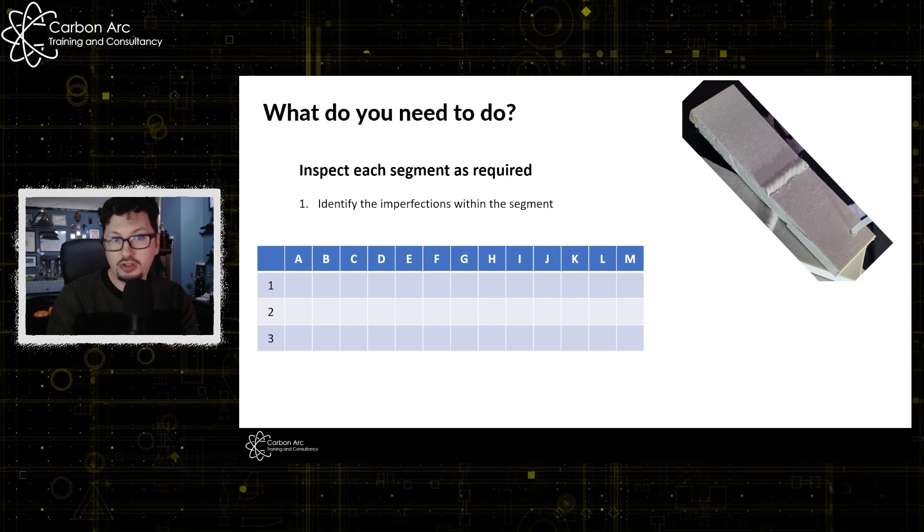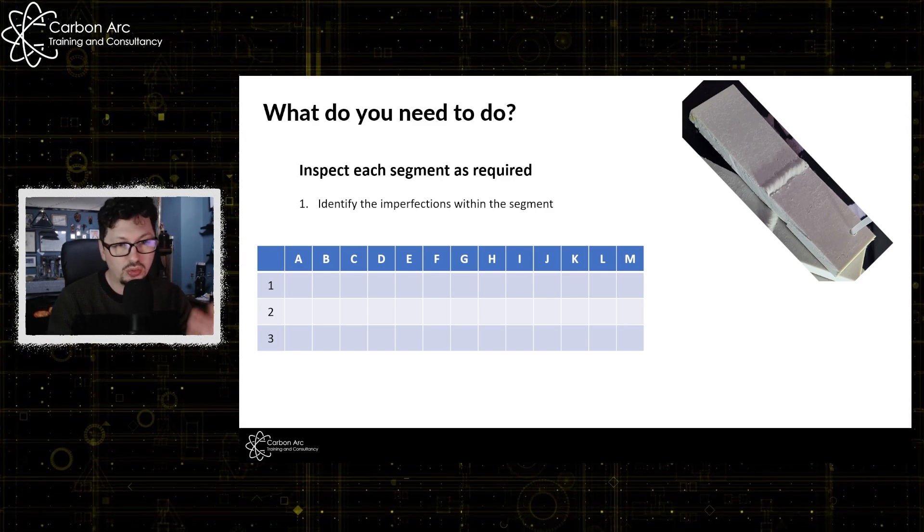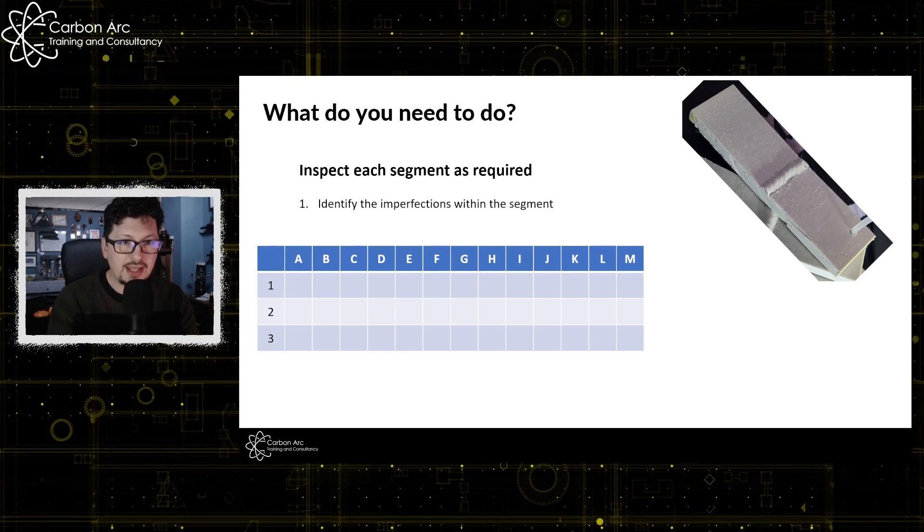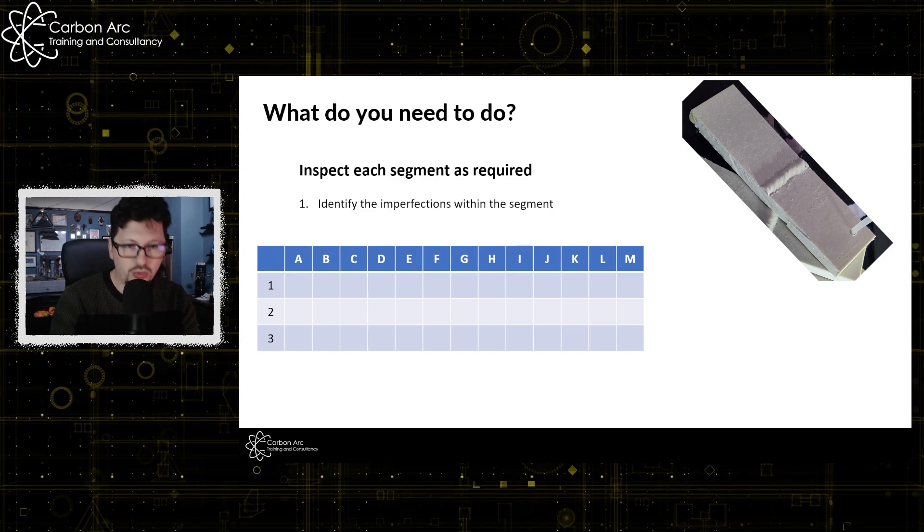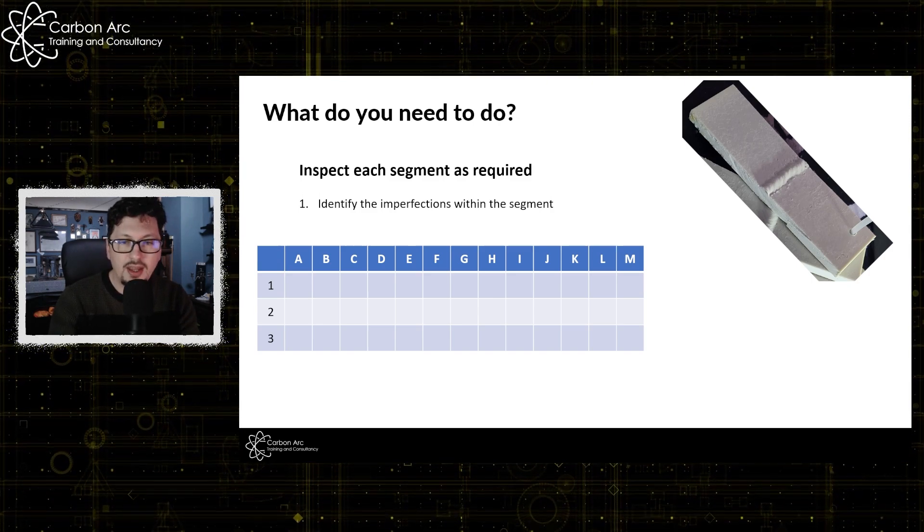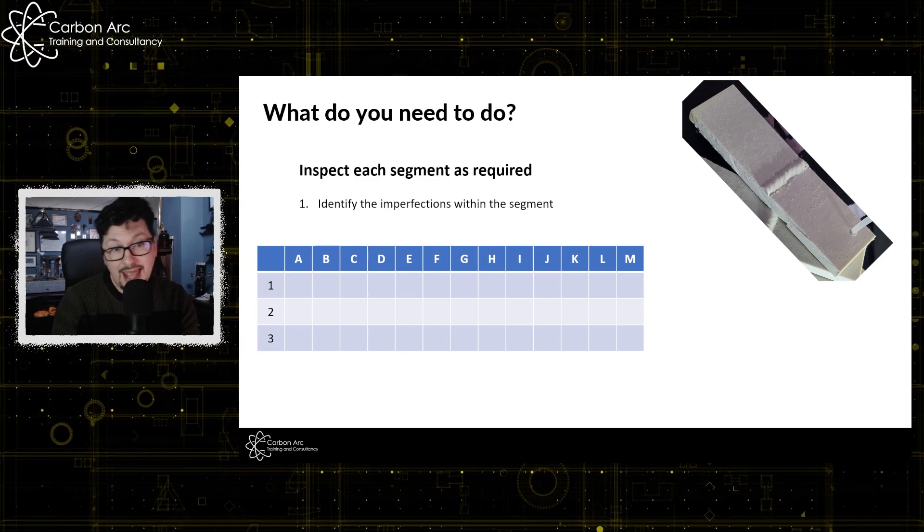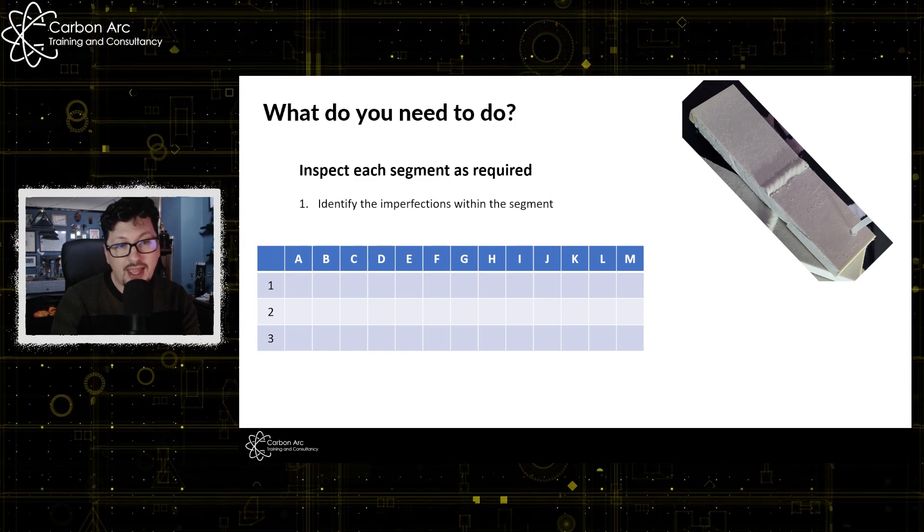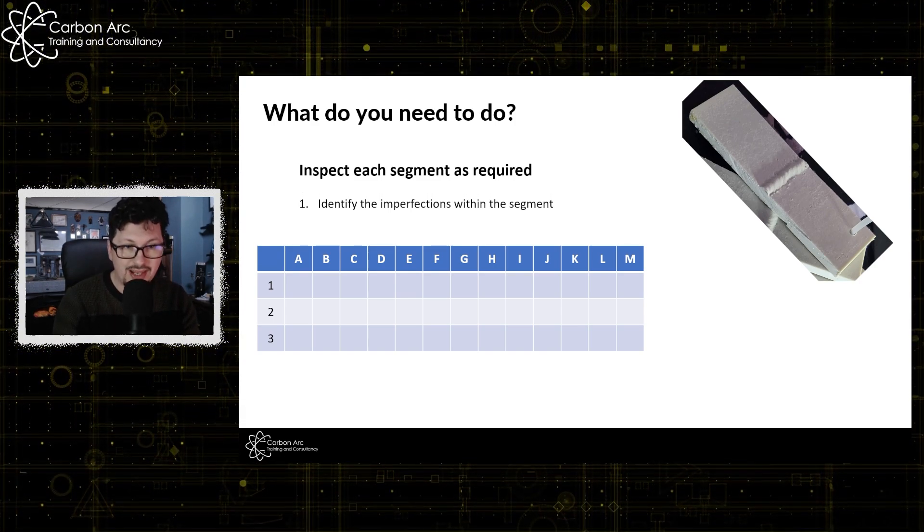So one, which imperfections do you have? Two, which are acceptable or rejectable to category A? And then which are acceptable or rejectable to category C? Along the top, we've got A to M, which are our defect types, which all have a list.